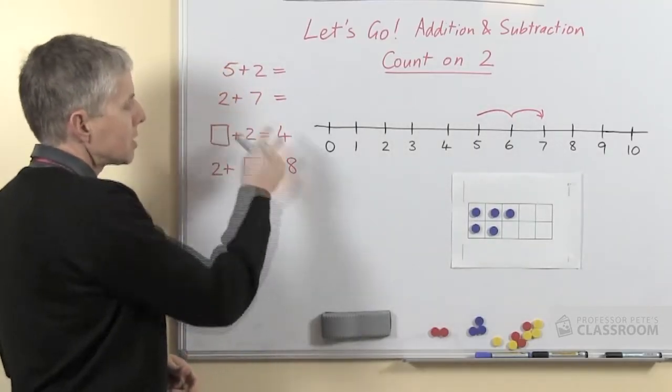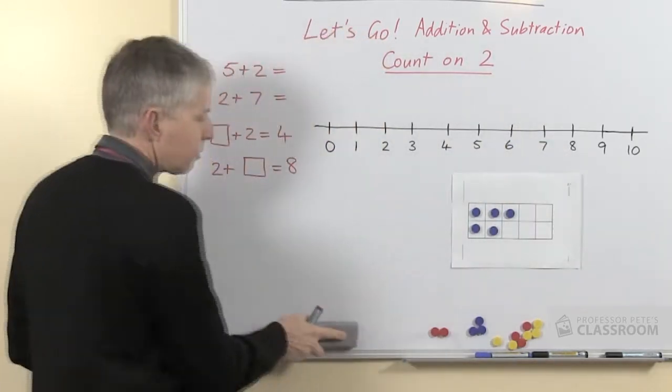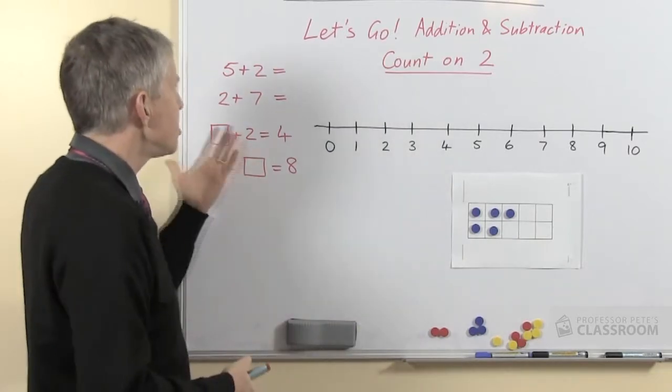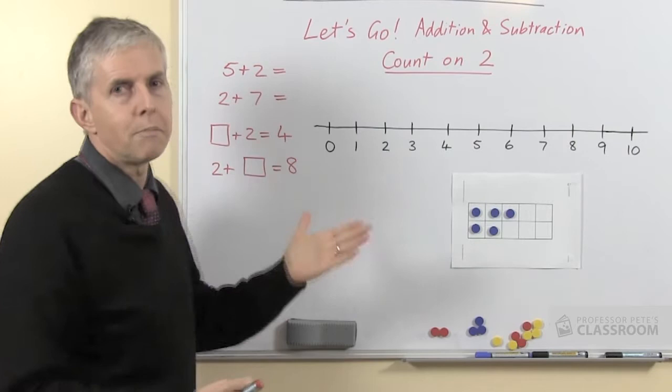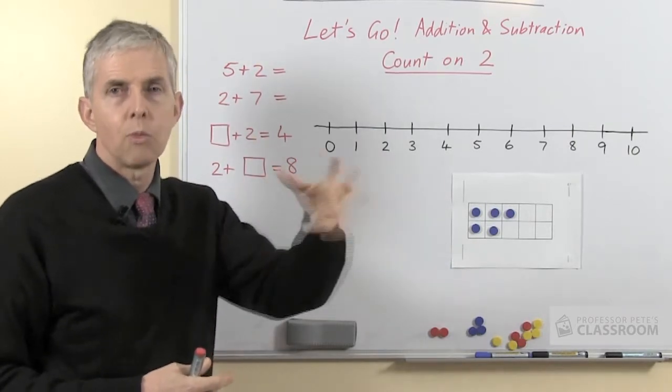With the second example, 2 plus 7, of course we're not going to start from the 2 and then count on 7, there is no count on 7 strategy. So we will teach our students for counting on small amounts and our recommendation is to go only up to 3, so count on 1, 2 or 3.